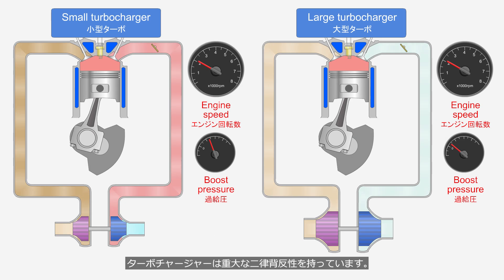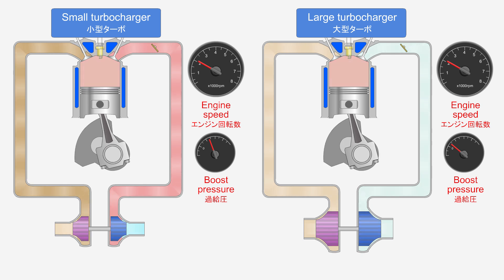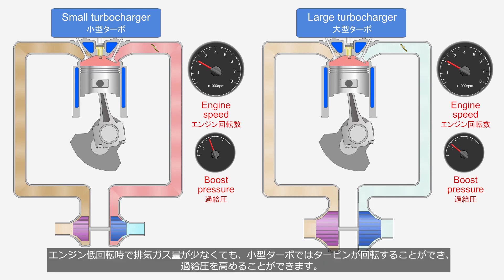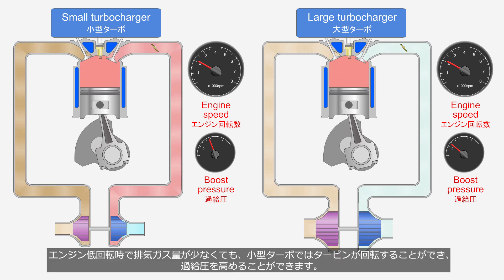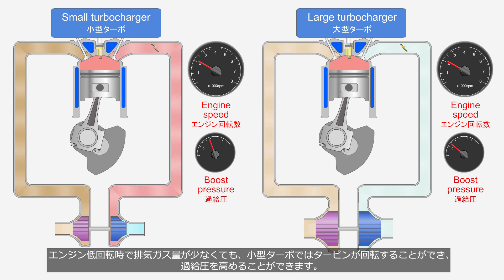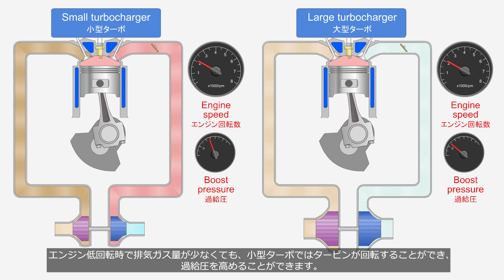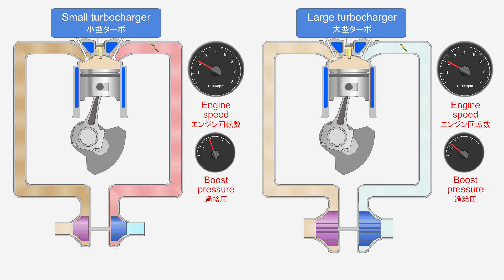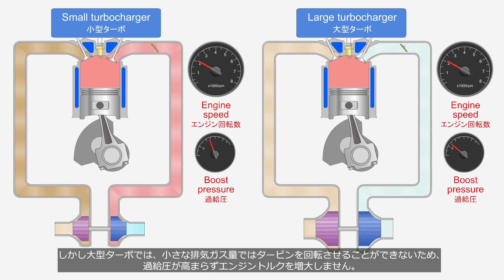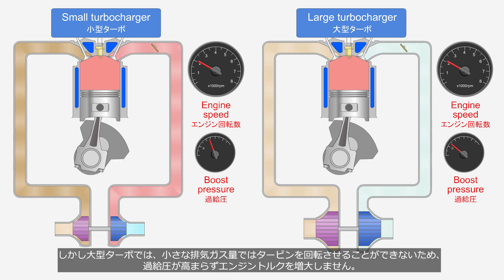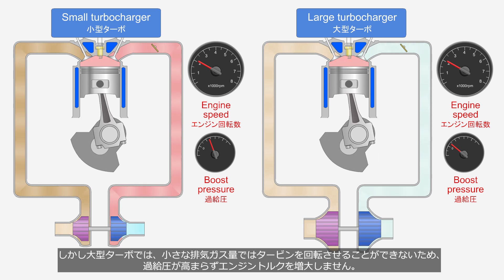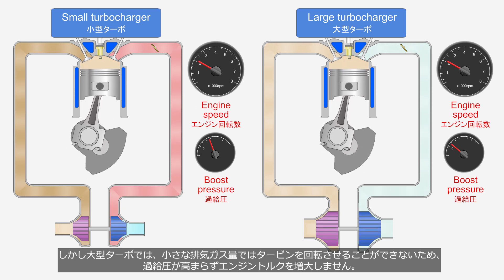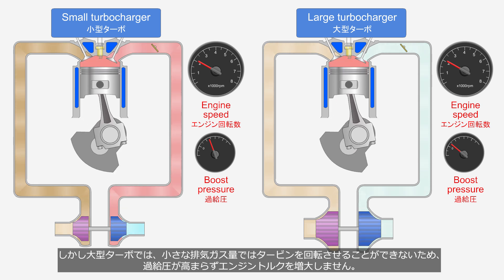Turbochargers have a significant dilemma. In small turbochargers, even at low engine speed with low exhaust gas volume, the turbine wheel can rotate and generate sufficient boost pressure. However, in large turbochargers, due to the small exhaust gas volume at low speeds, the turbine wheel cannot rotate, thus boost pressure does not rise, leading to low engine torque.